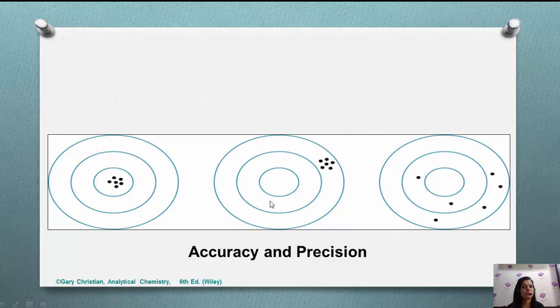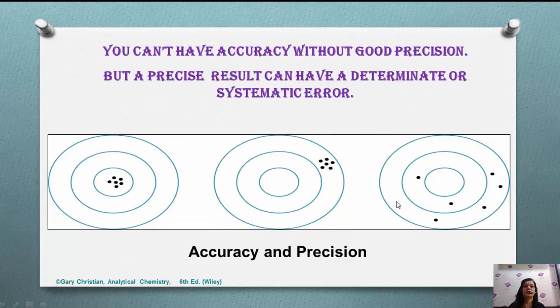In the second case, you performed the experiment and got results that are far from the center, but you are getting again and again nearest observations. Repeatability of the result is very good, so here results are not accurate but they are precise. In the third case, experiments are far from the center, here and there - they are neither accurate nor precise.